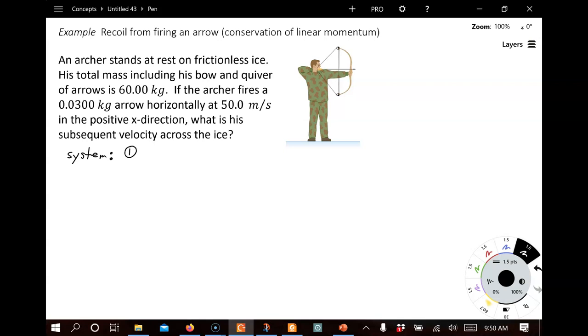We're going to have one, it's going to be the arrow, and two is the man with clothes, bow, etc. And in particular, we're going to use conservation of linear momentum, which says that before the interaction, the interaction in this case is firing the arrow, the total momentum before that, or initial, when we add it up for each thing in the system, at the end, if we add up the momentum for each object in the system, it's going to be the same.